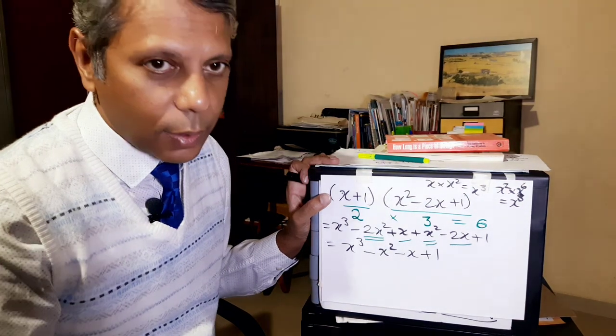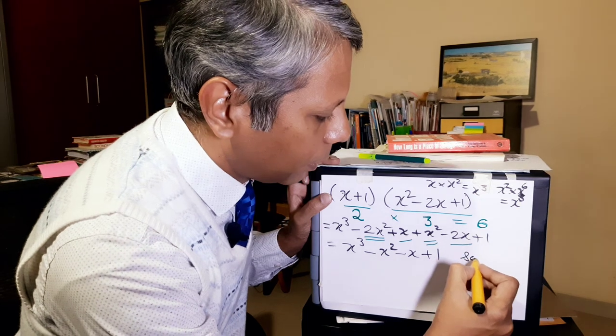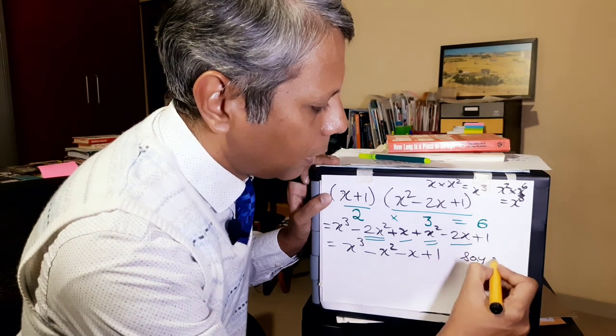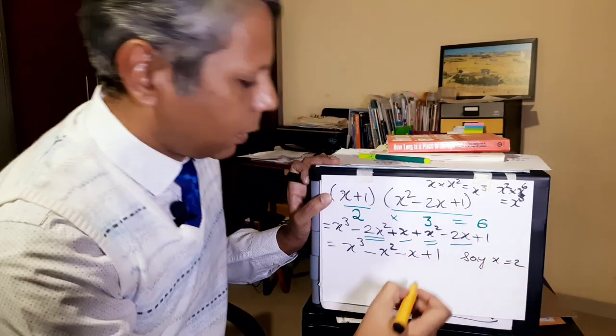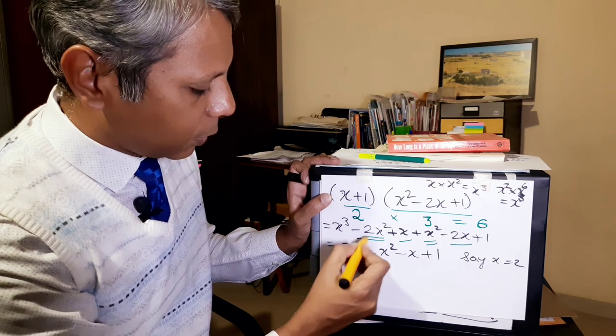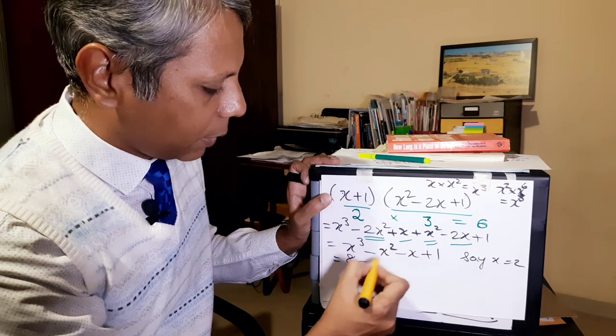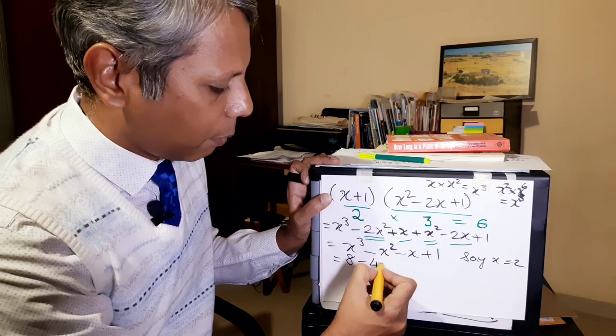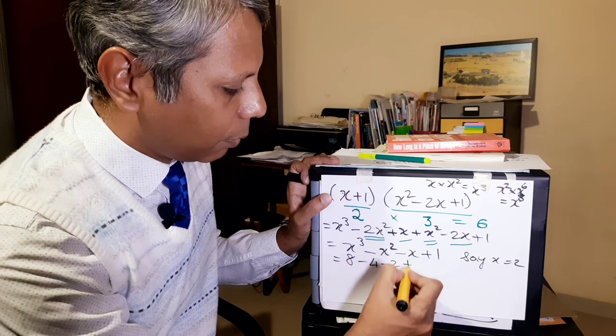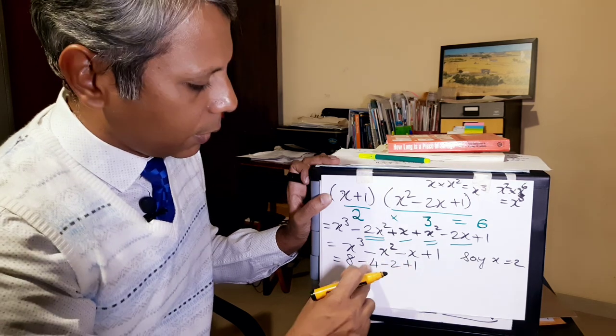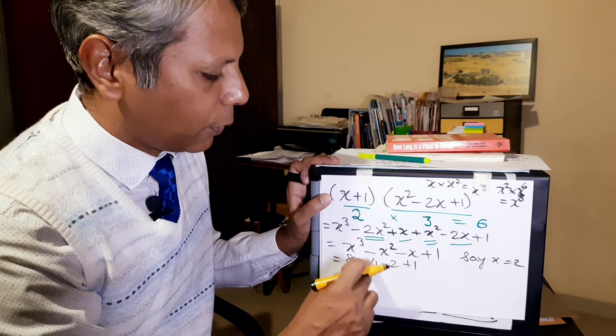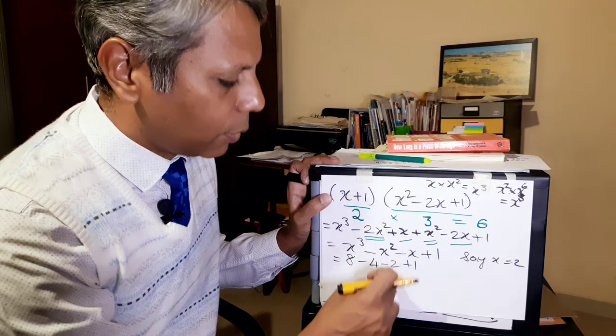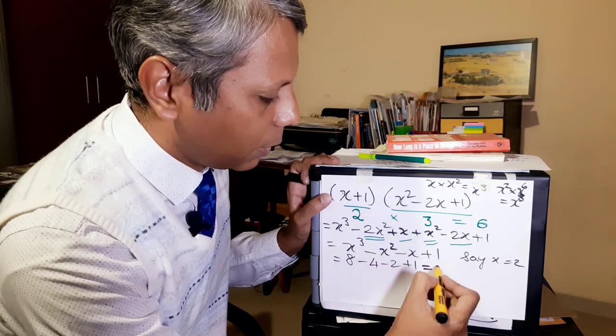We can quickly check to see if this is correct. So let's say x equals 2. x cubed is 8 minus 4 minus 2 plus 1. So this is 8 minus 4 is 4, 4 minus 2 is 2, 2 plus 1 is 3, so that is 3.